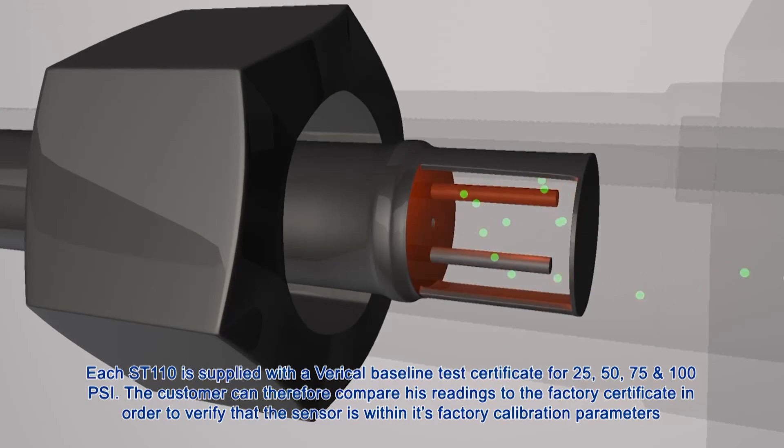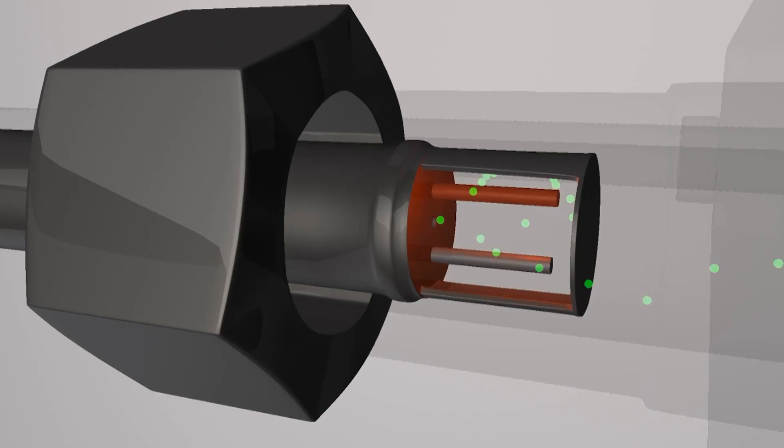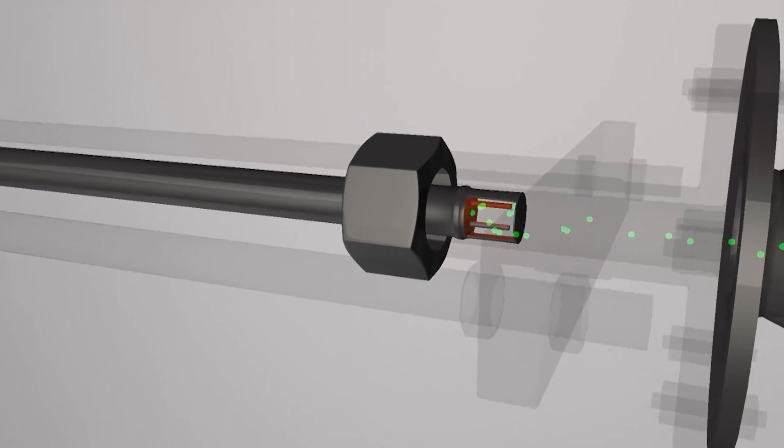Each ST110 is supplied with a Vari-Cal baseline test certificate for 25, 50, 75, and 100 PSI. The customer can therefore compare his readings to the factory certificate in order to verify that the sensor is within its factory calibration parameters.